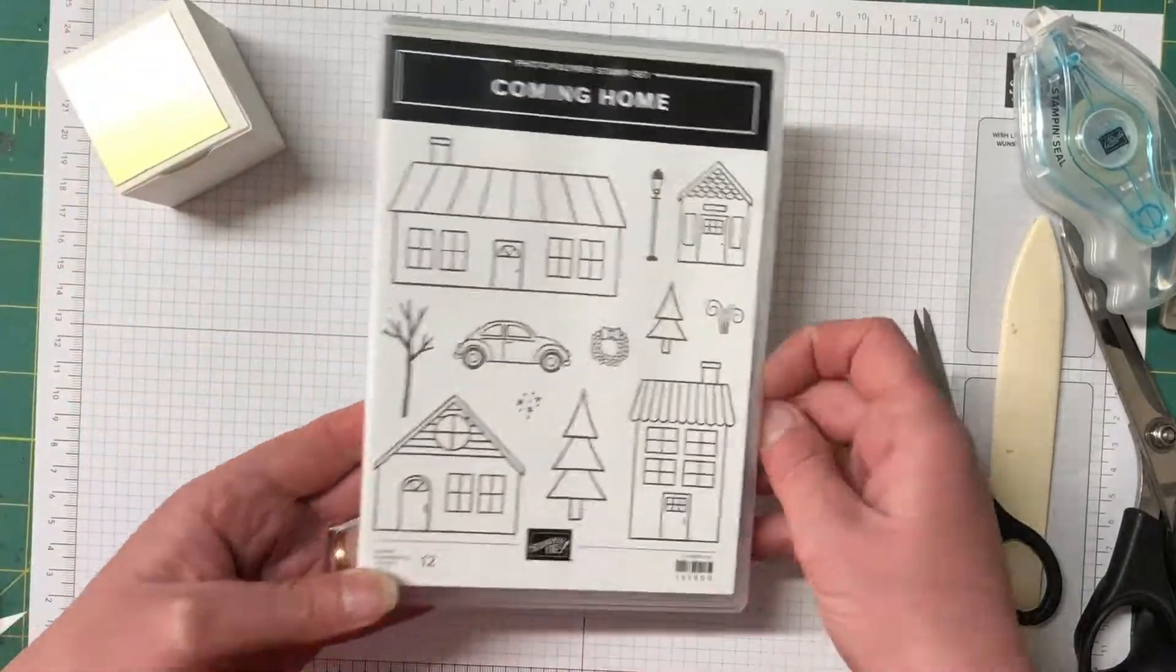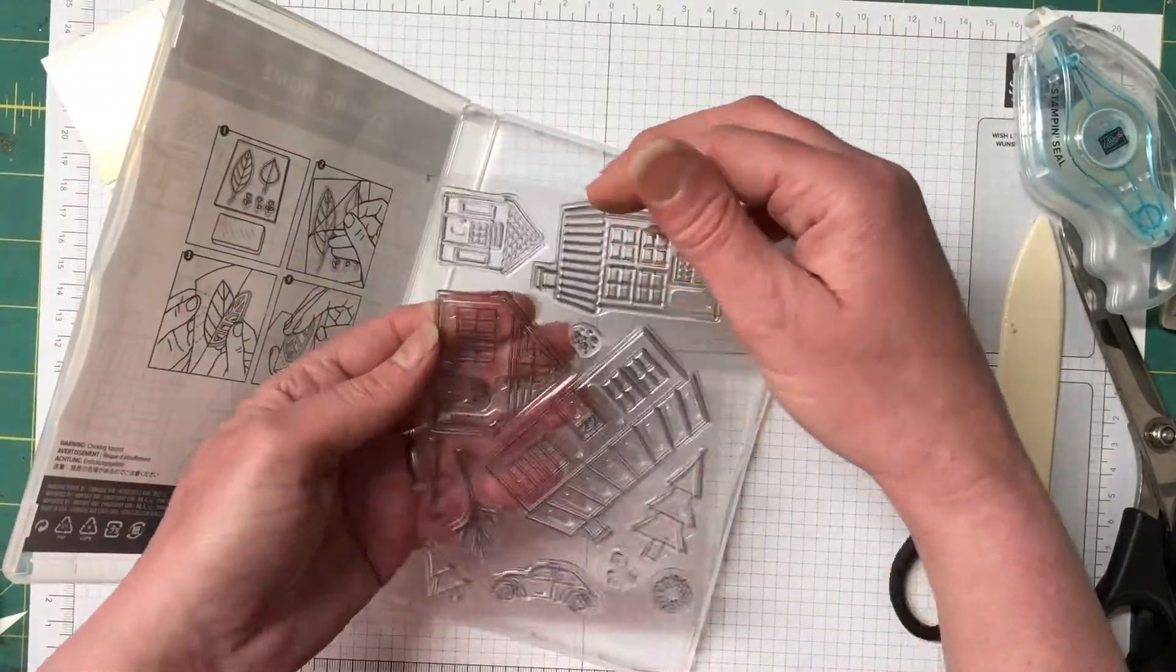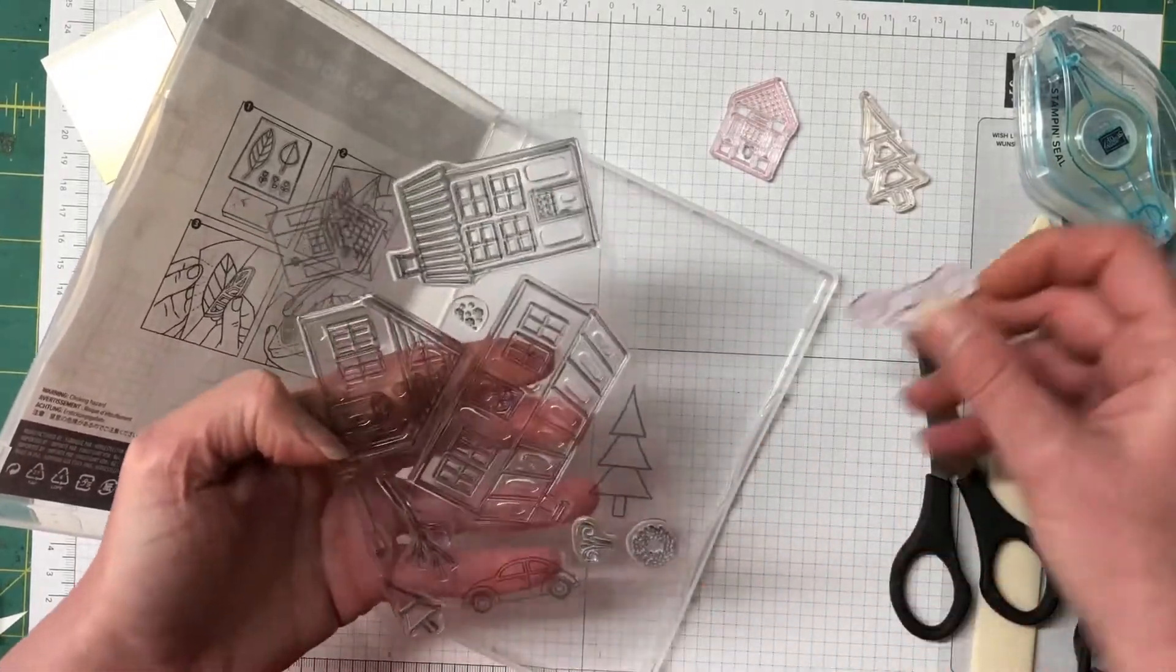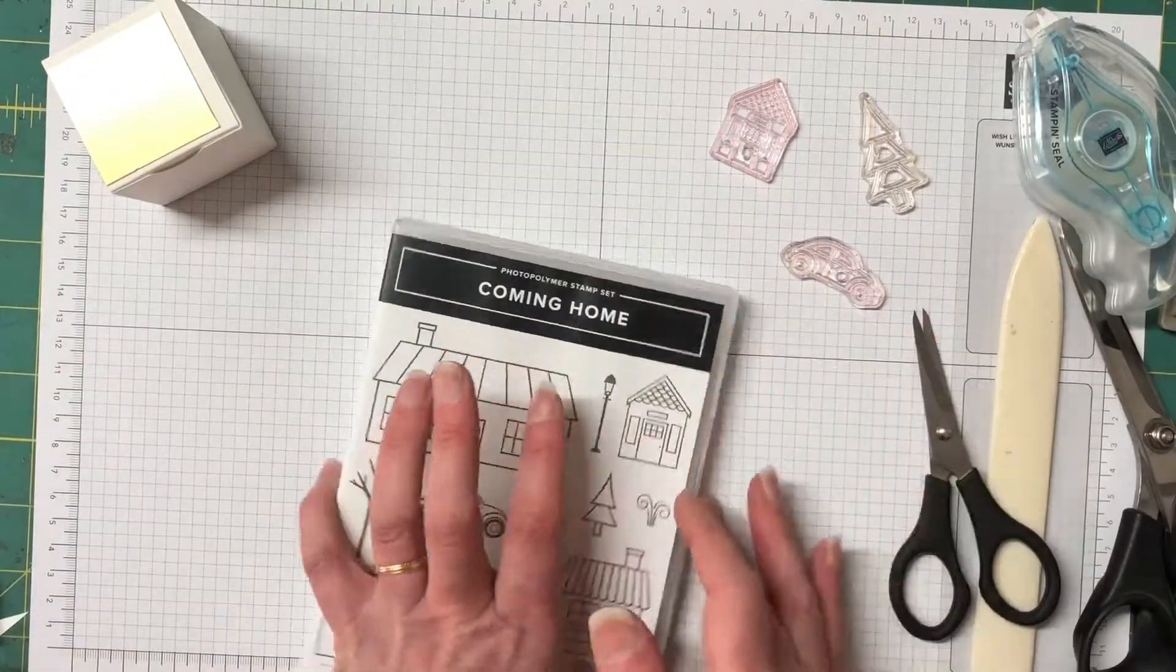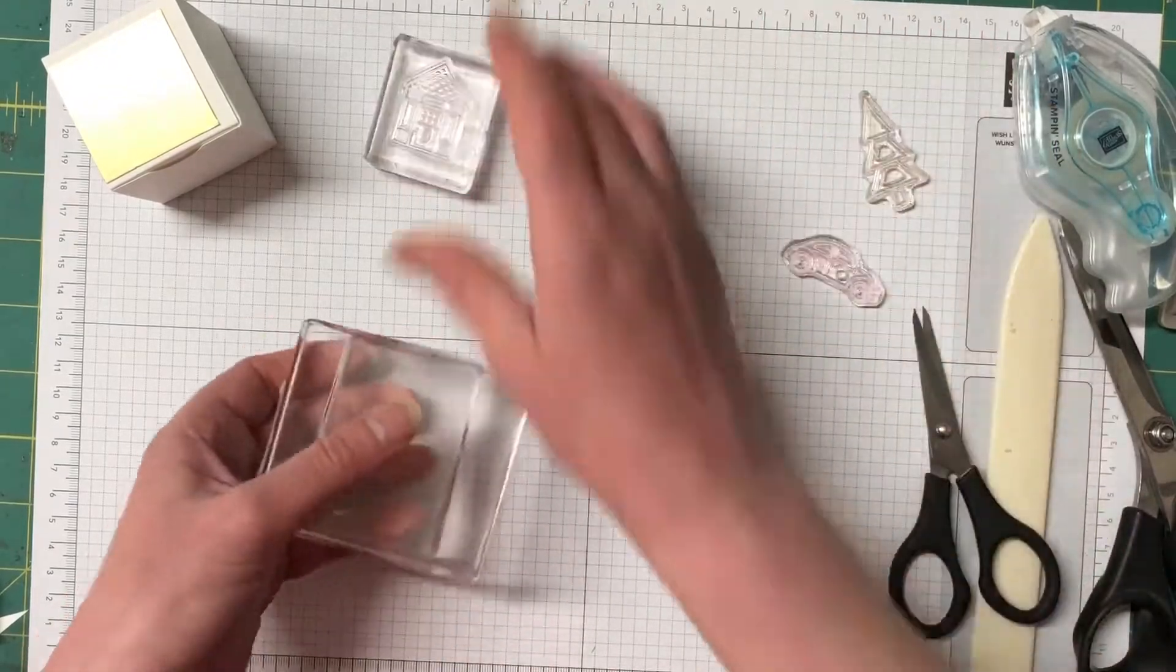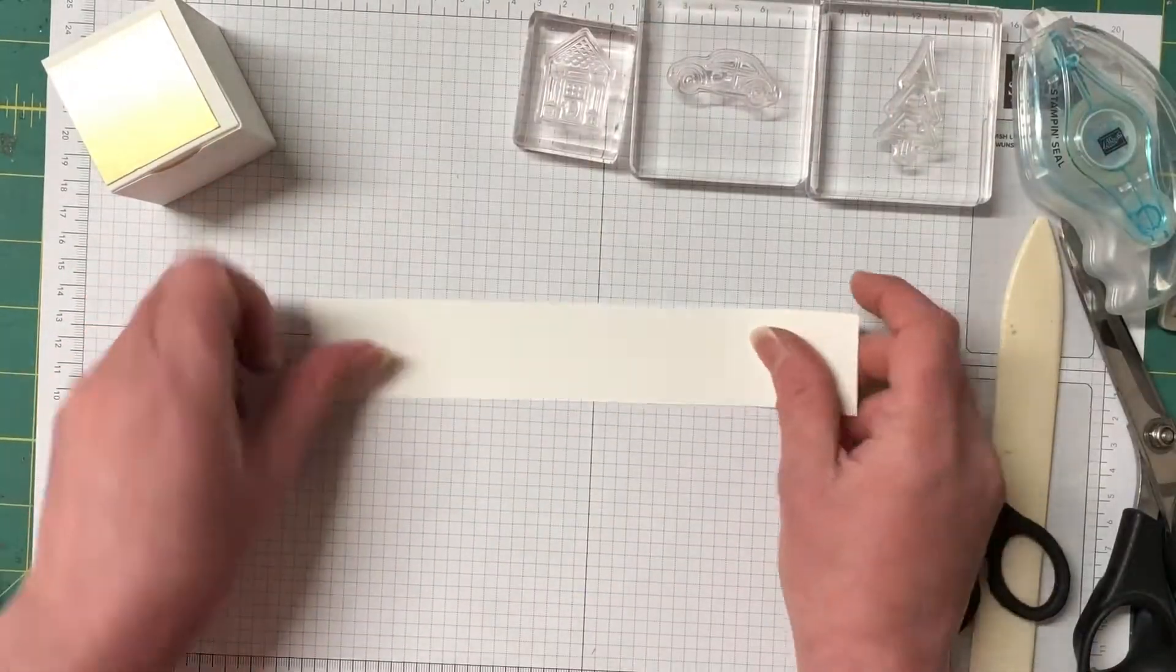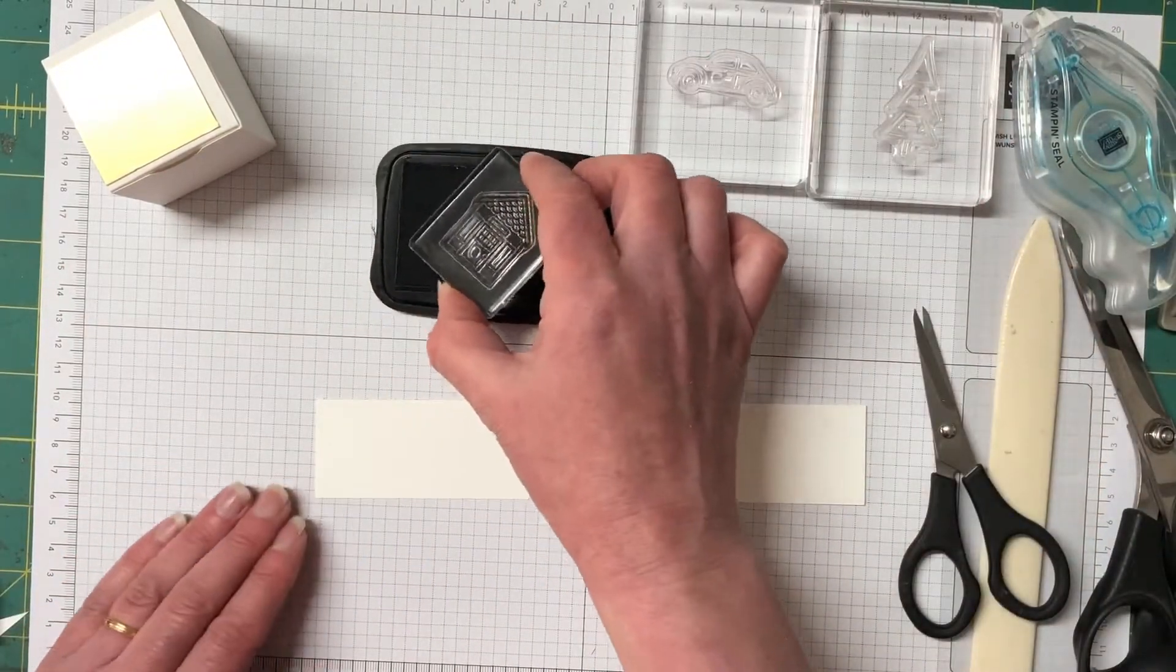Now to decorate it we're using the coming home stamp set and we've got the house the tree and then the car. So we're going to color these in with stamping blends as well. So all three of these images are going to be stamped with memento tuxedo black ink onto a strip of whisper white cardstock.